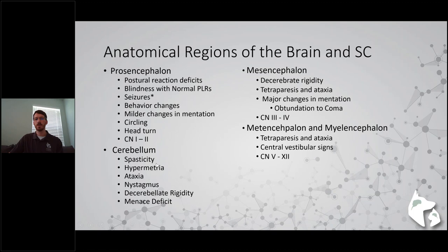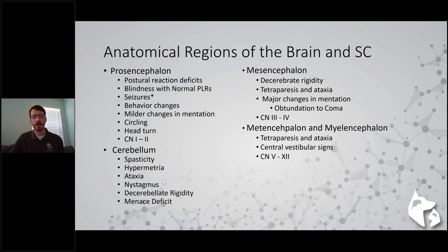The cerebellum is described by my mentors as being like a protective mother, putting a brake on everything to keep you safe. When you take away those brakes, you see animals that are very spastic, over-exaggerated, or hypermetric. You'll see ataxia, sometimes nystagmus, a specific posture called decerebellate rigidity, and some menace deficits. The cerebellum dampens all movement trying to keep things in a nice, controlled, smooth movement.